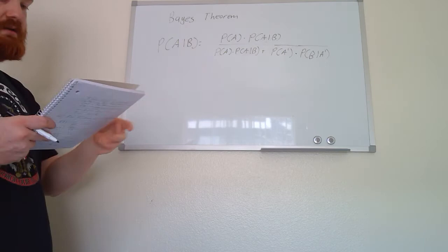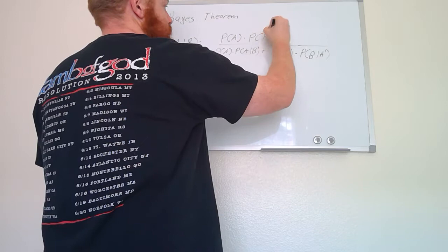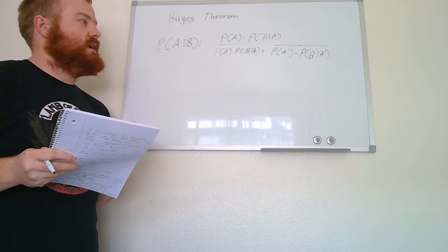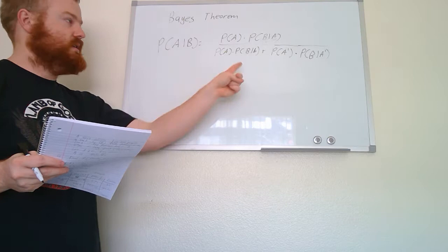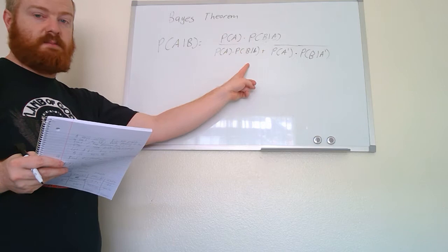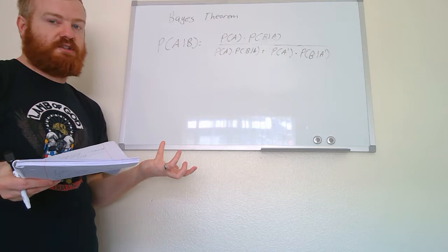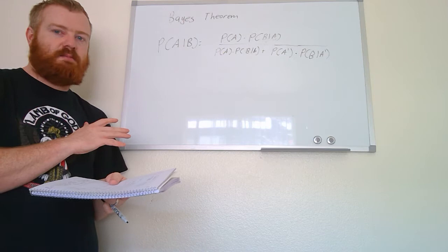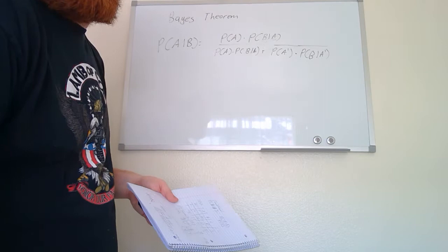Bayes theorem says that the probability of A given B is equal to the probability of A times the probability of B given A — just this part flipped around — divided by P(A) times P(B|A), that same thing we had on top, plus P(A complement), which means the probability that A doesn't happen, times the probability of B given A complement. The formula looks really complicated but once we get into the next example it should make more sense.